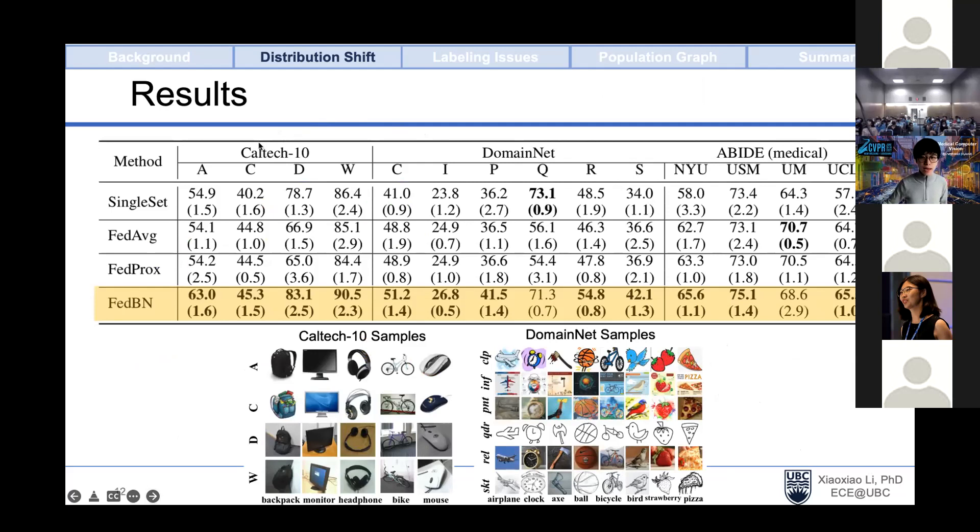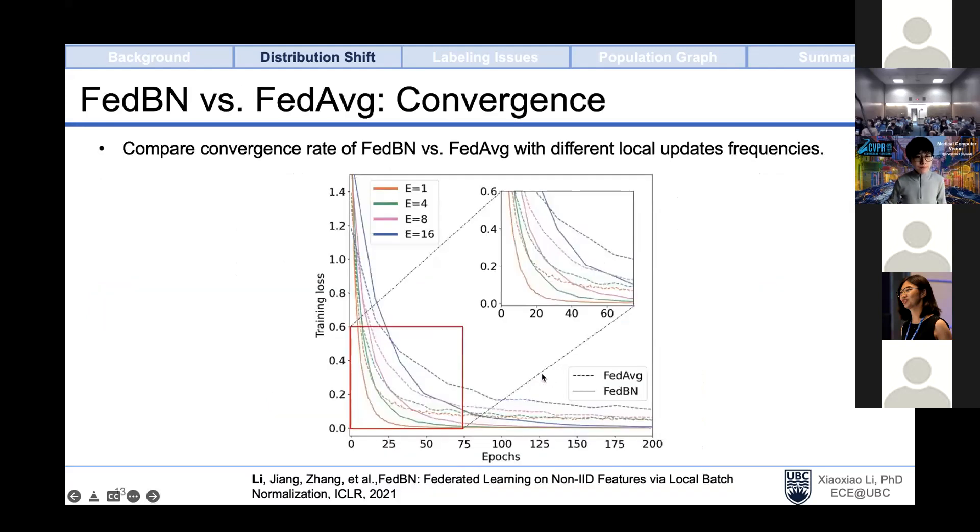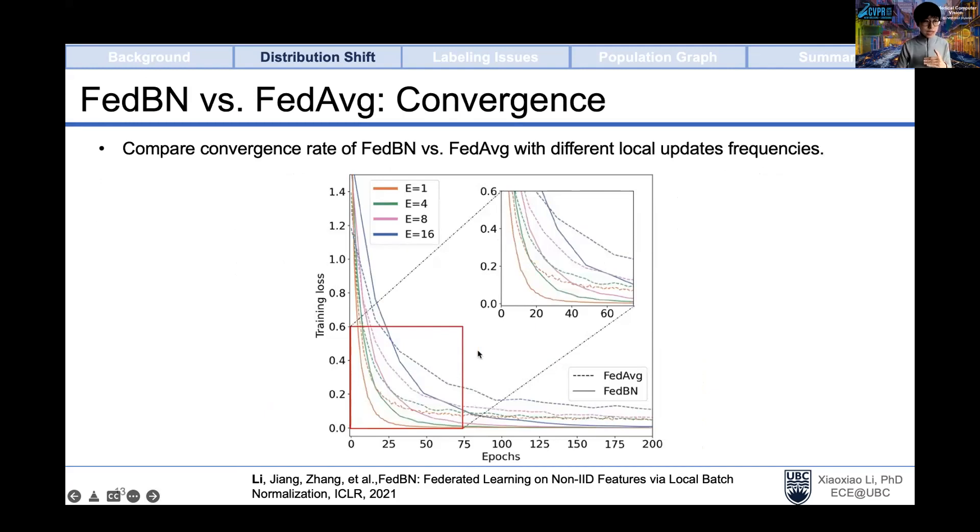This can be viewed as a plug-and-play scheme that can be combined with different optimization, aggregation, and communication strategies. Our method is implemented with PyTorch and also integrated with many federated learning libraries. For example, in Flower, you can find FedBN as a benchmark. We conducted extensive experiments on real-world datasets, including image classification on Caltech, where images are acquired in different cameras and environments, DomainNet with different image styles, and neurodisorder tasks with patients from different medical institutions. Besides the benefits of having better training surface and better learning accuracy, we also show the benefits of FedBN of having better convergence compared with FedAverage.